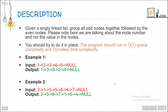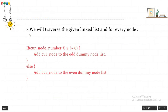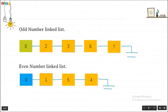Now let's see the approach. Consider this to be the given linked list. First, we will make two dummy nodes: one for the even-numbered linked list and one for the odd-numbered linked list. We will traverse the given linked list, and for every node, if the current node number mod 2 is not equal to 0 (i.e., the node is odd-numbered), we will add the current node to the odd dummy node list.